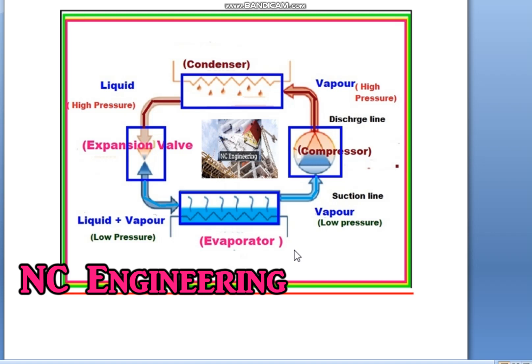Commonly we use refrigerant R22. The boiling point of R22 is minus 40 degrees. So whenever our application temperature is higher than minus 40 degrees — suppose in a room we need cold air at 17 degrees — when this air of higher temperature comes in contact with the coil surface where this refrigerant is flowing, it will give its heat to the refrigerant and the air will become cold.